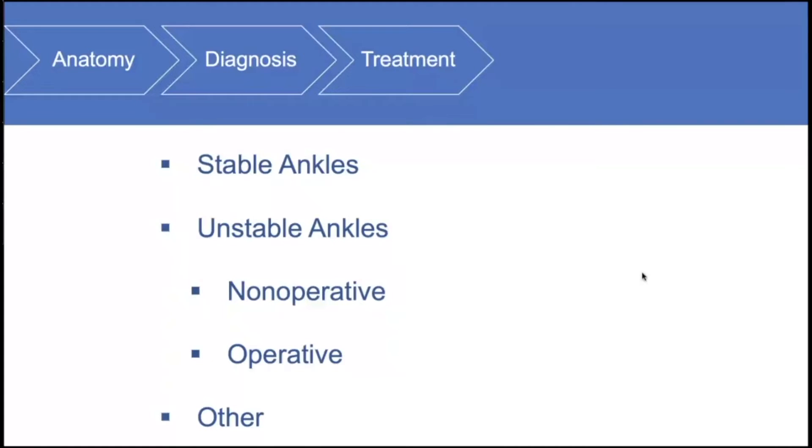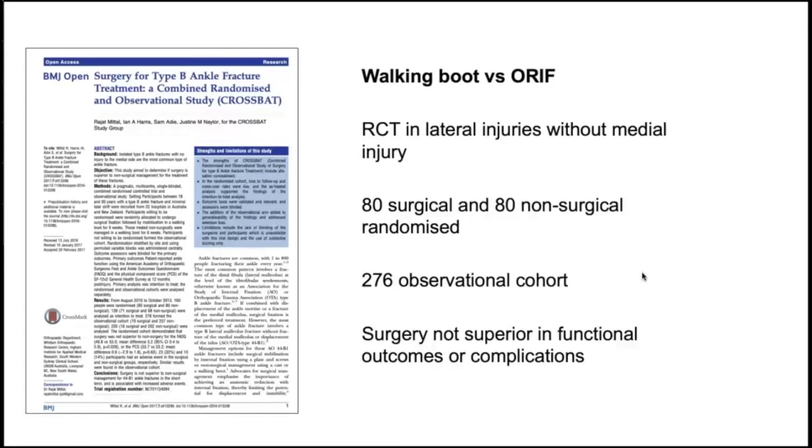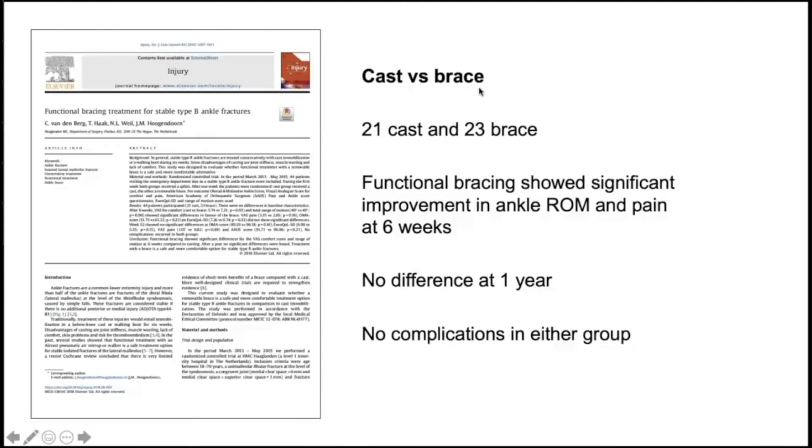The treatment. First, stable ankles. There's two RCTs on this. For ones that were classed as stable, they either had a walking boot or ORIF in what we termed a Crossbat study. It was a randomized control trial, level one evidence, very well-performed with AT surgery and AT non-surgery. With this, surgery did not give superior functional outcomes or complications. It was then cast versus brace. Functional bracing showed significant improvement in ankle range of motion and pain at six weeks, but no difference at one year. If you put someone in a plaster, you lose the initial rehab, but it does improve in time.